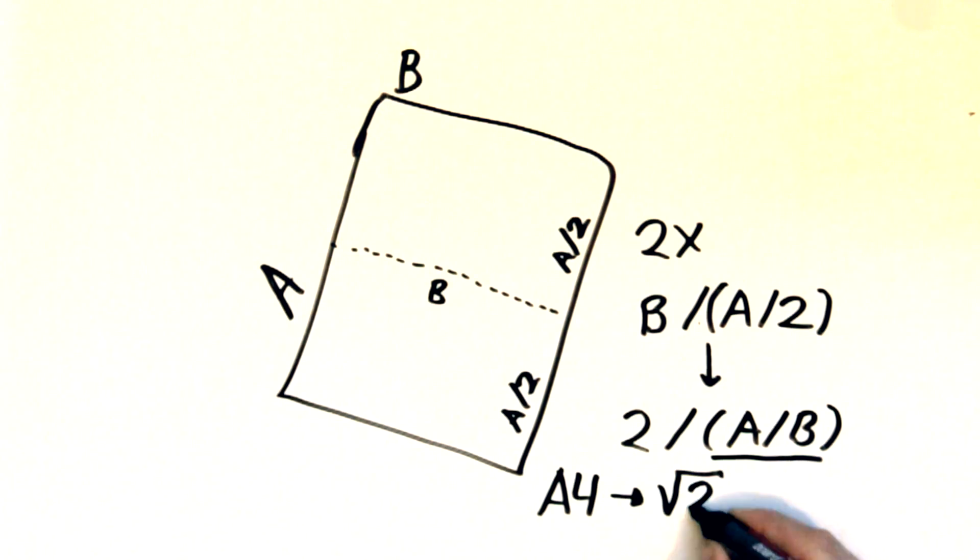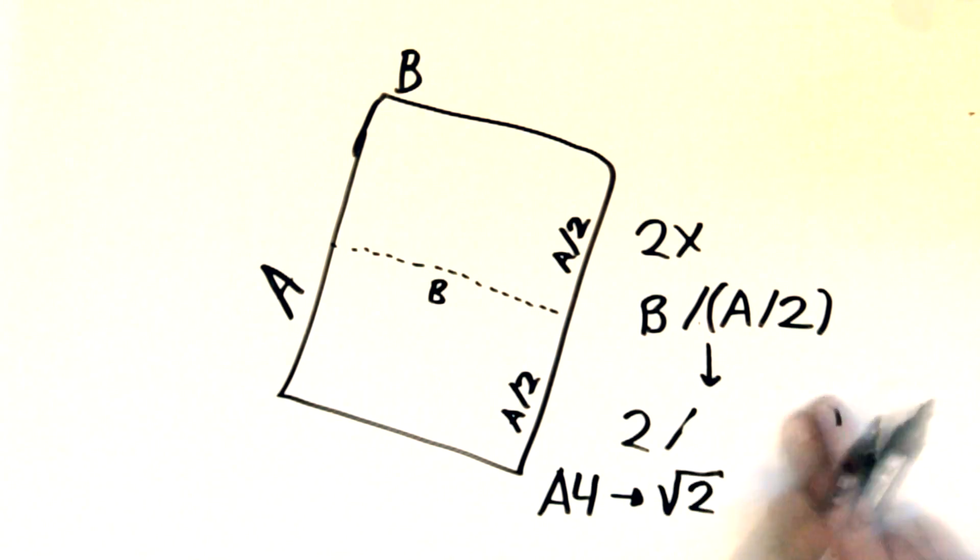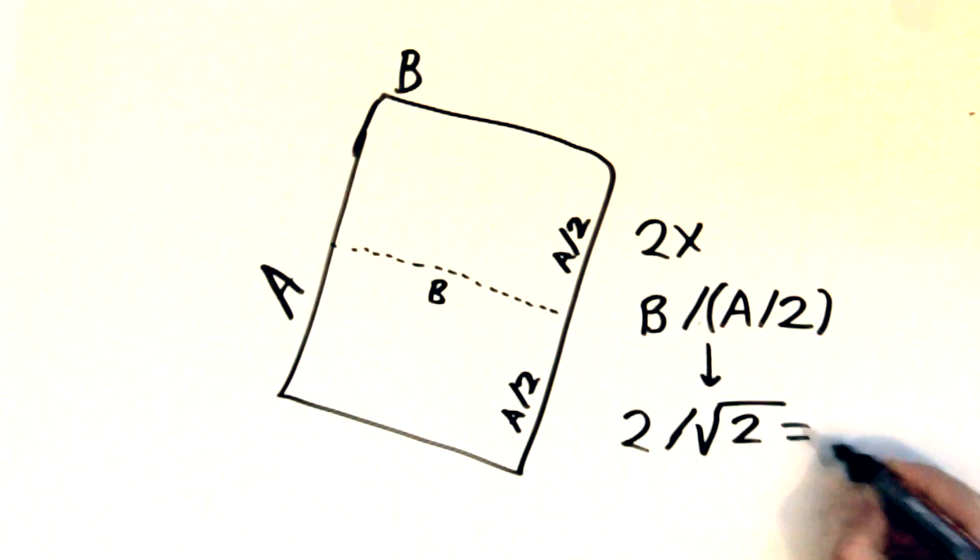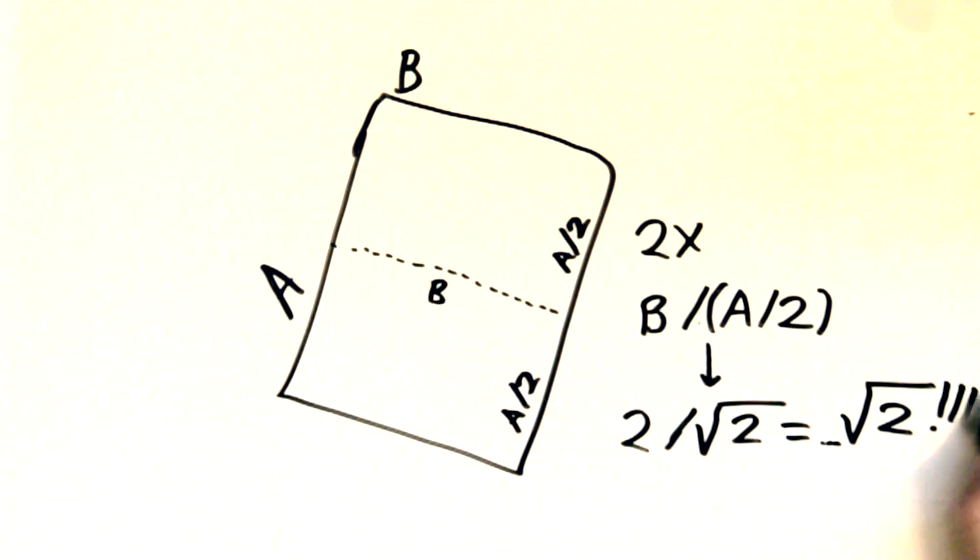So for A4 paper we have an aspect ratio of the square root of 2. So we divide 2 by the square root of 2 and we get the square root of 2. Magic!